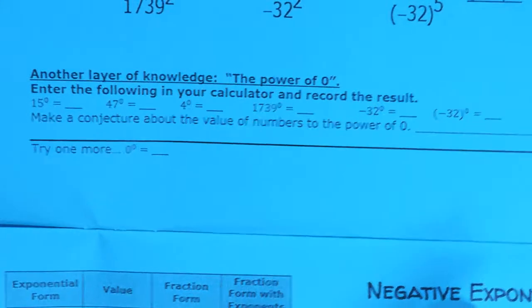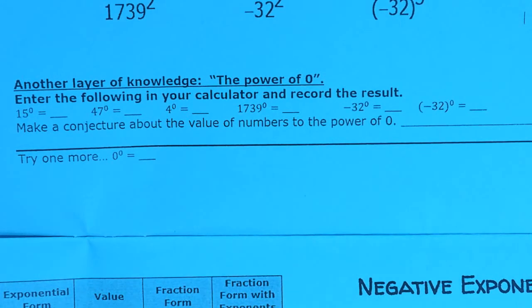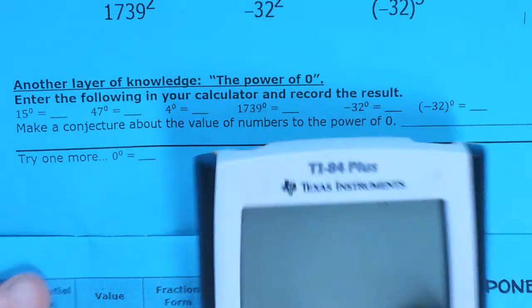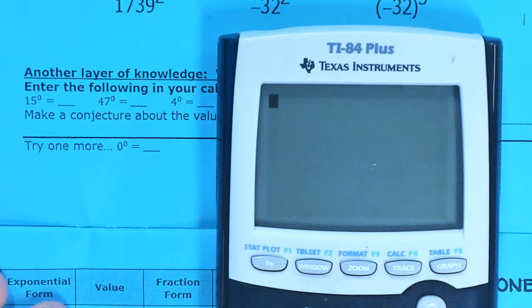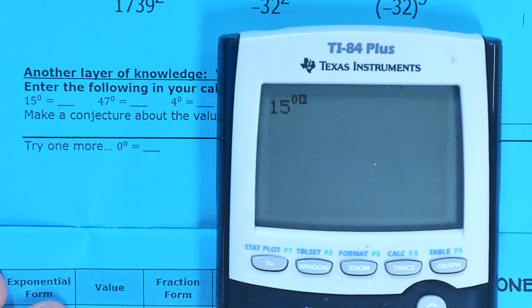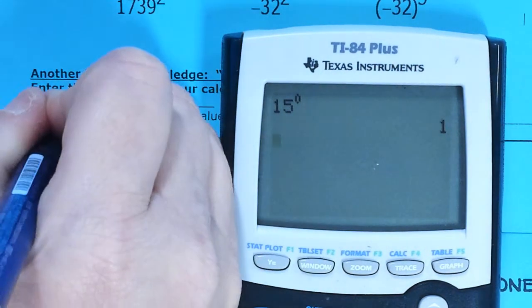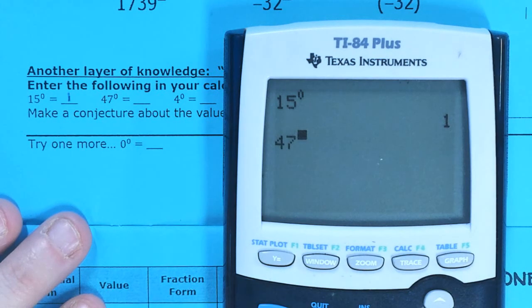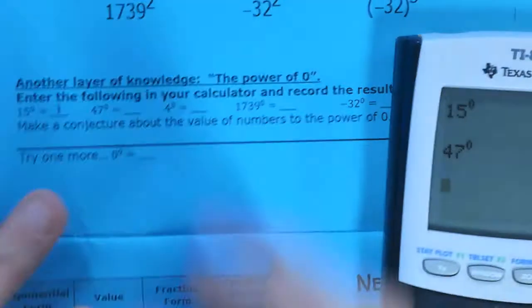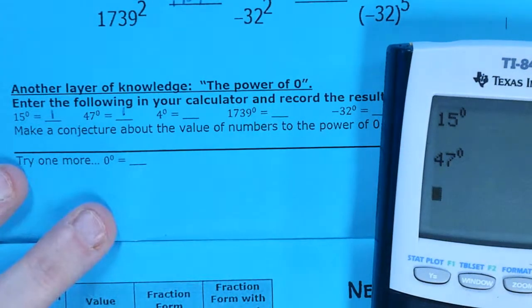So we've got to figure out what that means. Let's start by putting these in our calculator and seeing what do we actually get. When I put one of these in my calculator, what do I actually get? Let's try this first one. 15 to the 0 power gives me 1.